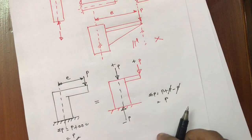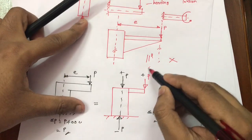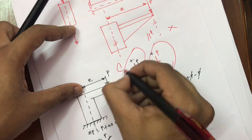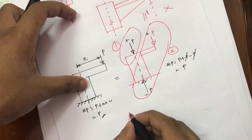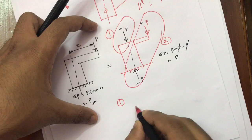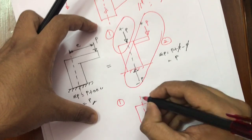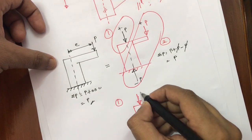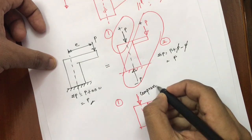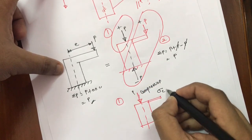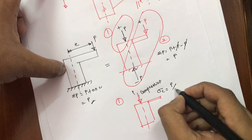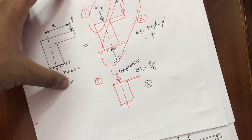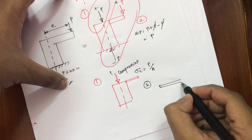Now I am going to consider the system in a different way — making one combination and another combination. In the first combination, the element has one load P acting along the axis, which is a kind of pushing force, so it will be compression. Due to compression, the stress generated is compressive stress, which is load divided by cross-sectional area. Before going to the second combination, I am going to explain the concept of a couple.